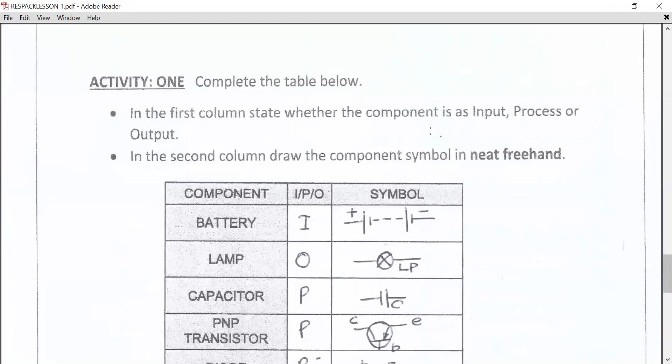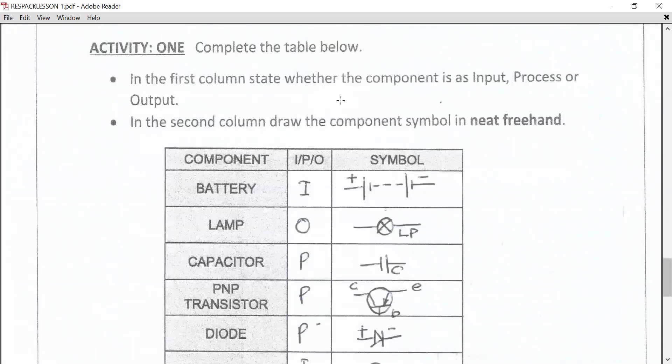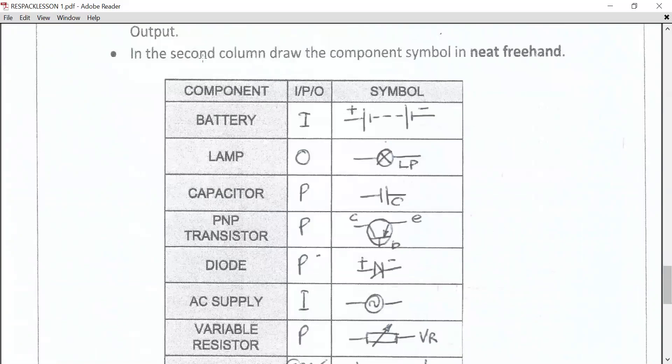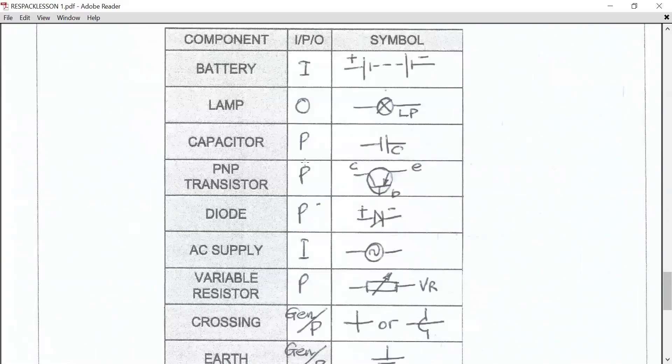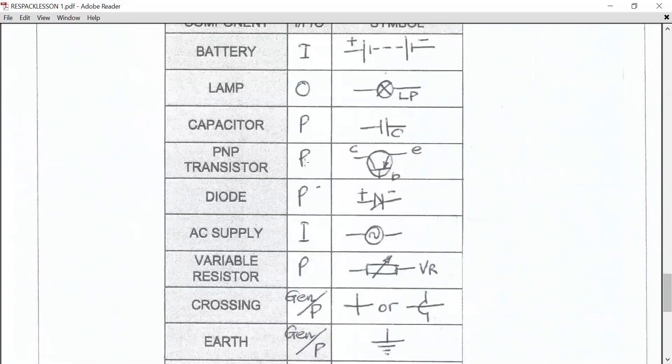Now let's go to activity one. In the first column, state whether the component is an input, process, or output. Second column, draw the component. Here's your first column. I have drawn and filled in all your input, process, and output. Where did you get it from? You got it from your page one.